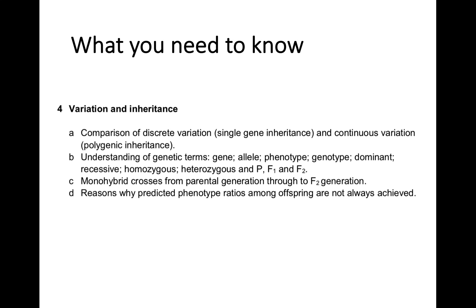So that is variation and inheritance. You need to know your different forms of variation and how they are inherited by single gene or polygenic inheritance. You need to know all the key terms: phenotype, genotype, alleles, recessive, dominant, homozygous, and heterozygous, and how to work through parent and offspring generations. You also need to know why phenotype ratios among offspring are not always achieved perfectly — because fertilization is random. I've attached quizzes with questions mostly to do with terminology that will hopefully help you out. Thank you very much for listening.